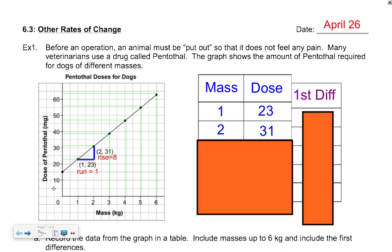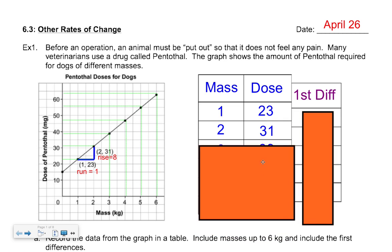We're going to look at other rates of change. You have this graph in front of you — don't start writing too quickly — but from the graph we have to read the data to fill in a table. The table will have mass on one side and dose on the other. This is like medicine for dogs: how many milligrams — mg is milligrams — of medicine do we give to dogs based on how big they are? So if it's a three-kilogram dog, you would give them what looks like 39 milligrams.